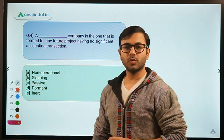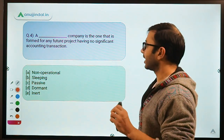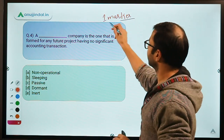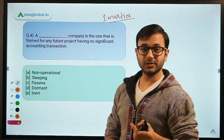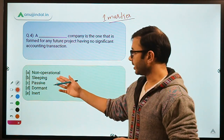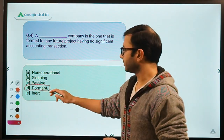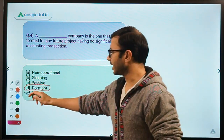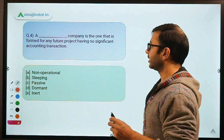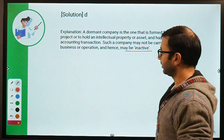Question four: a blank company is one that is formed for any future project having no significant accounting transaction. The options are non-operational, sleeping, passive, dormant, and inert. The correct answer is D — dormant company. A dormant company is formed for any future project with no significant accounting transaction, and it may also be called an inactive company.